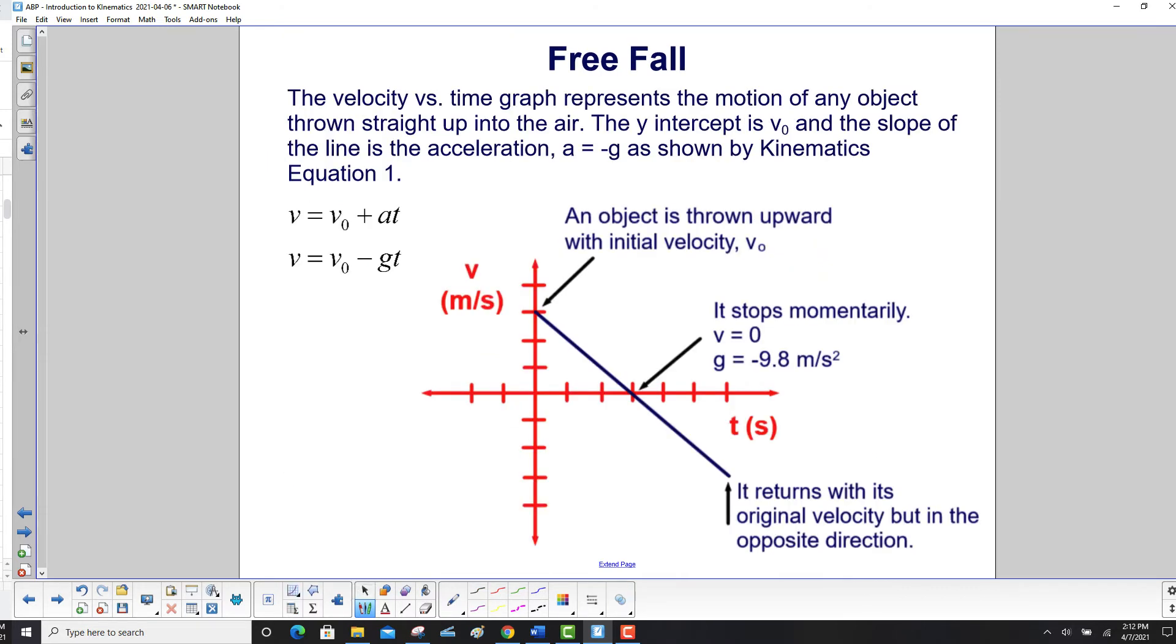The velocity versus time graph represents the motion of any object thrown straight up into the air. The y-intercept over here is v0.